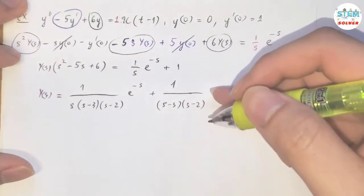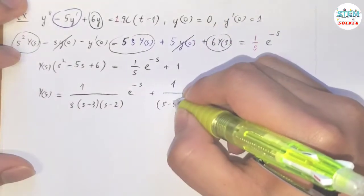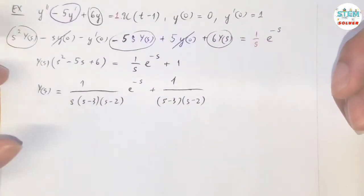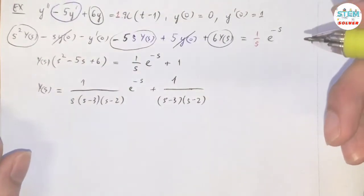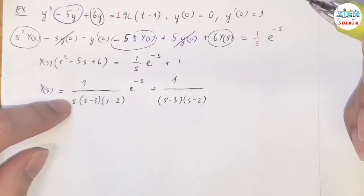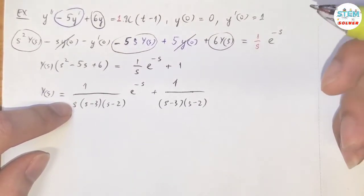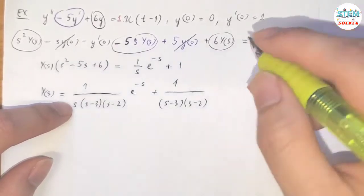Now, at this point, for this one we are going to use a shortcut to find partial fractions. We don't need to find partial fractions for both of these, but I can use a shortcut for this one, but for this one it looks like I need to use the long method here. Let me show you both methods.